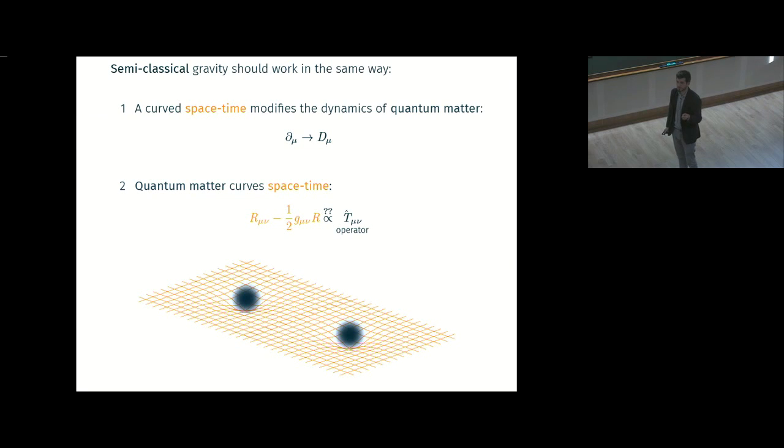The difficulty, of course, is to source space-time curvature from quantum matter. This part is difficult, and this part we don't know. So now that matter is fuzzy, I have operators on this side, and scalars, numbers on this side. We don't really know what to do.